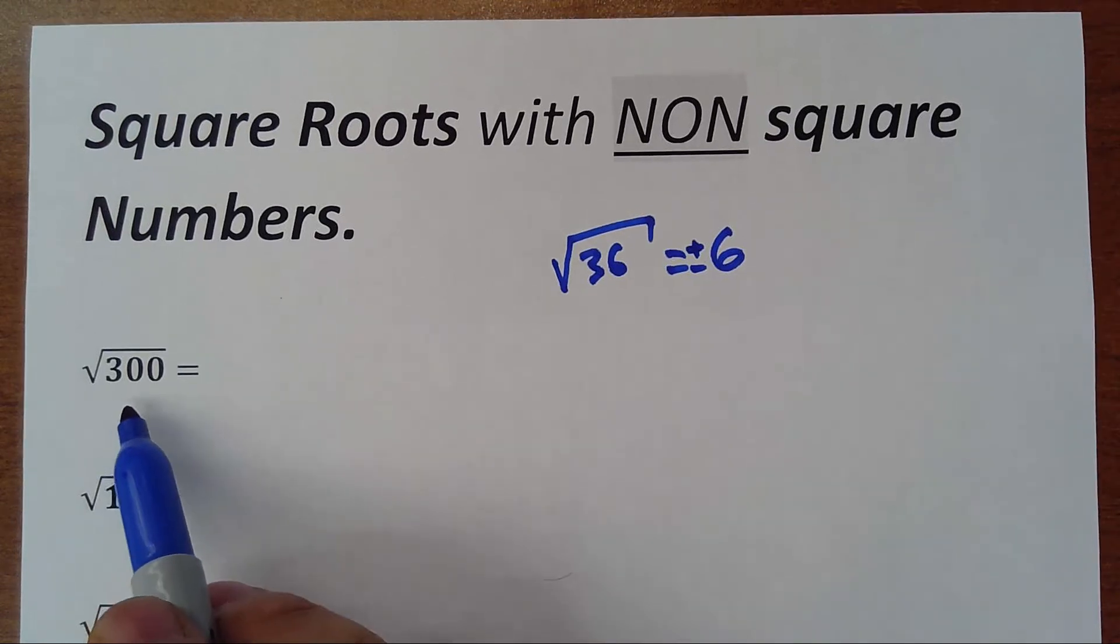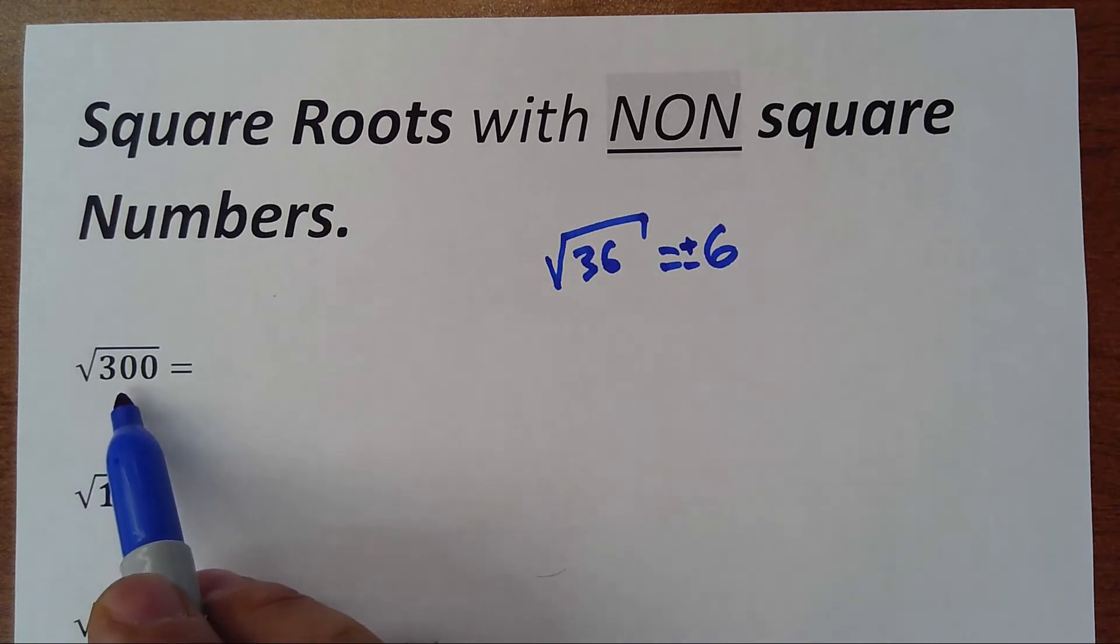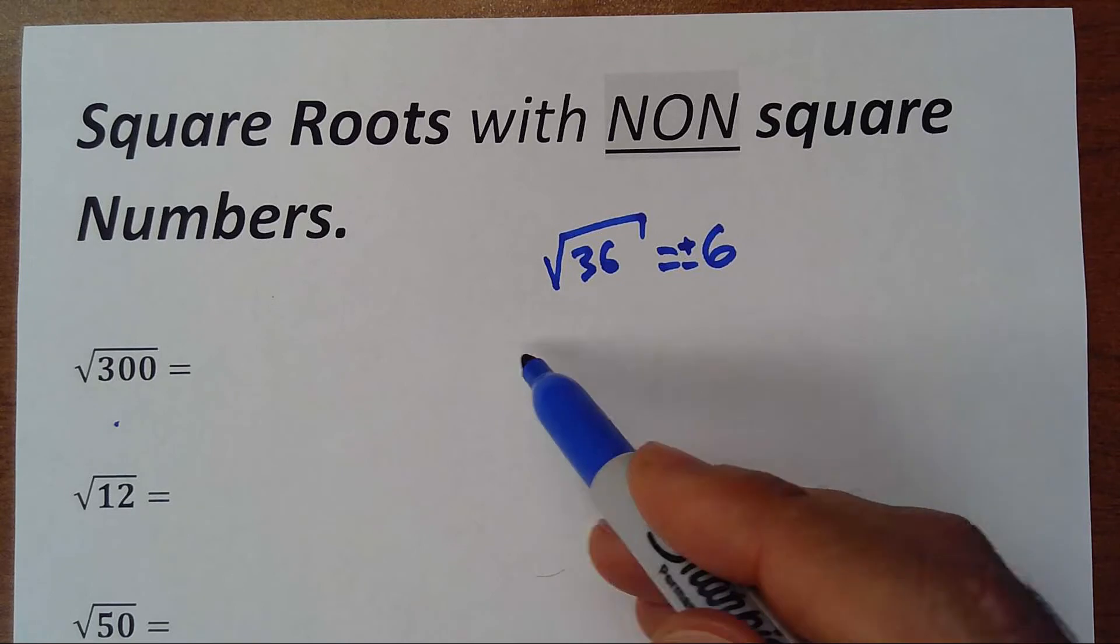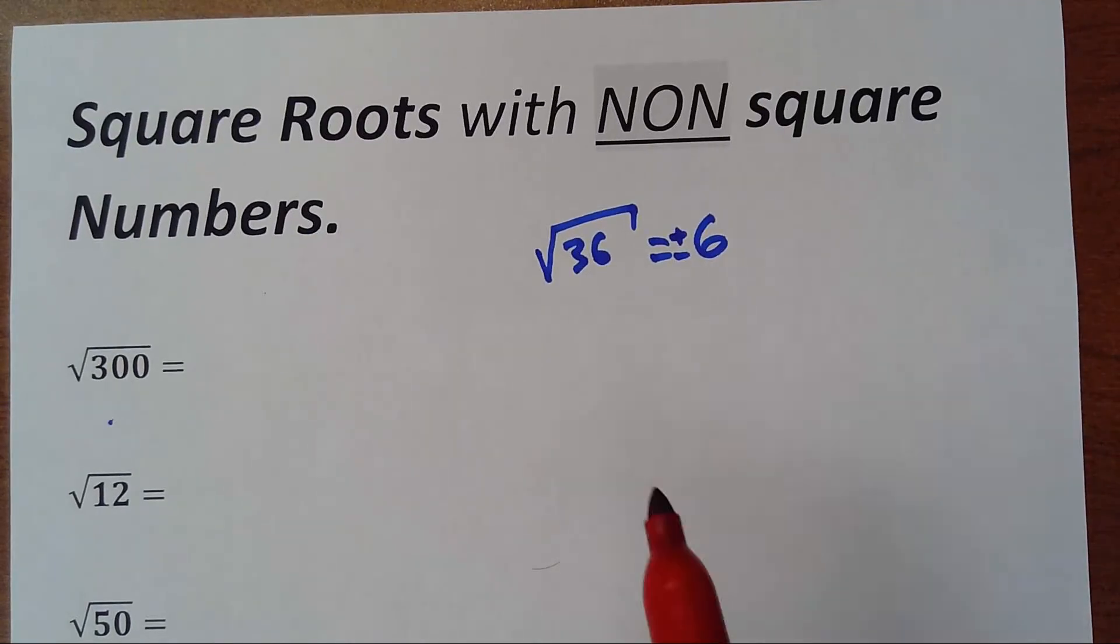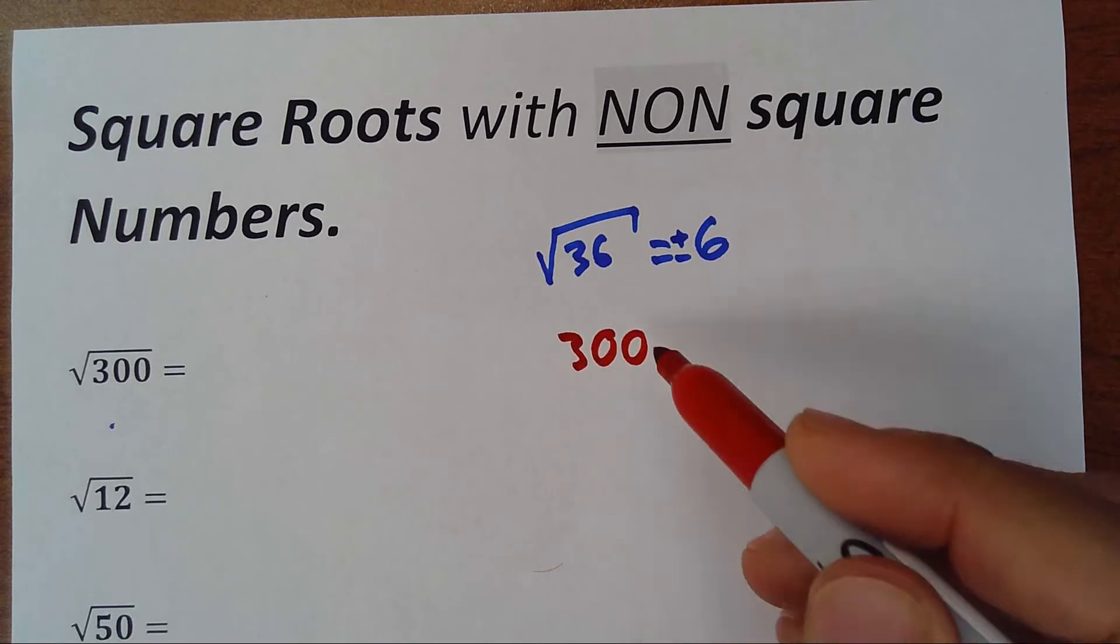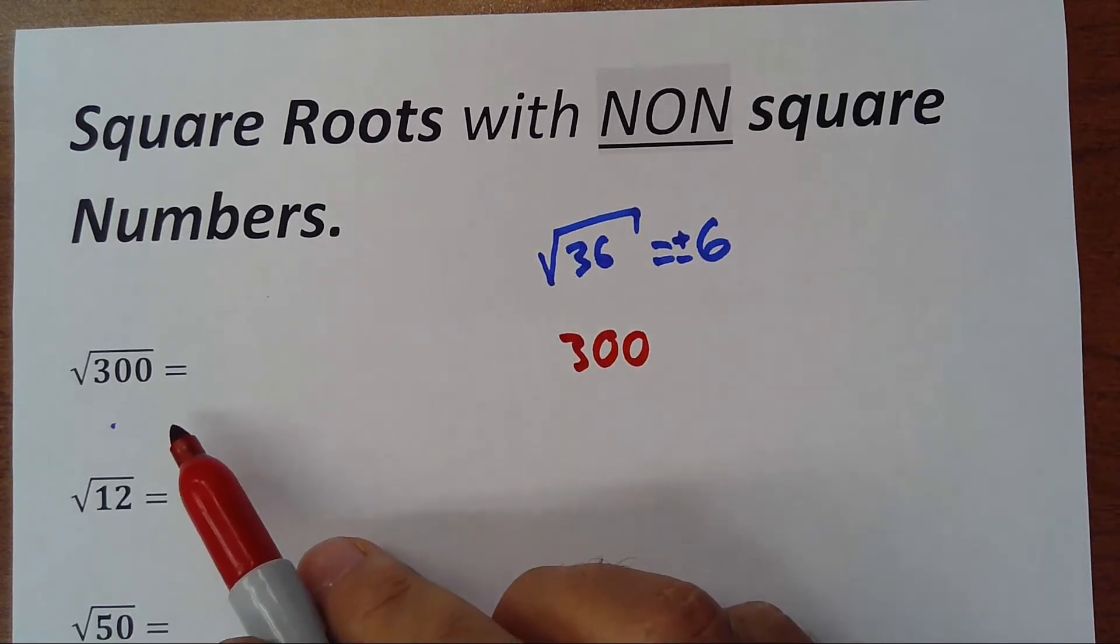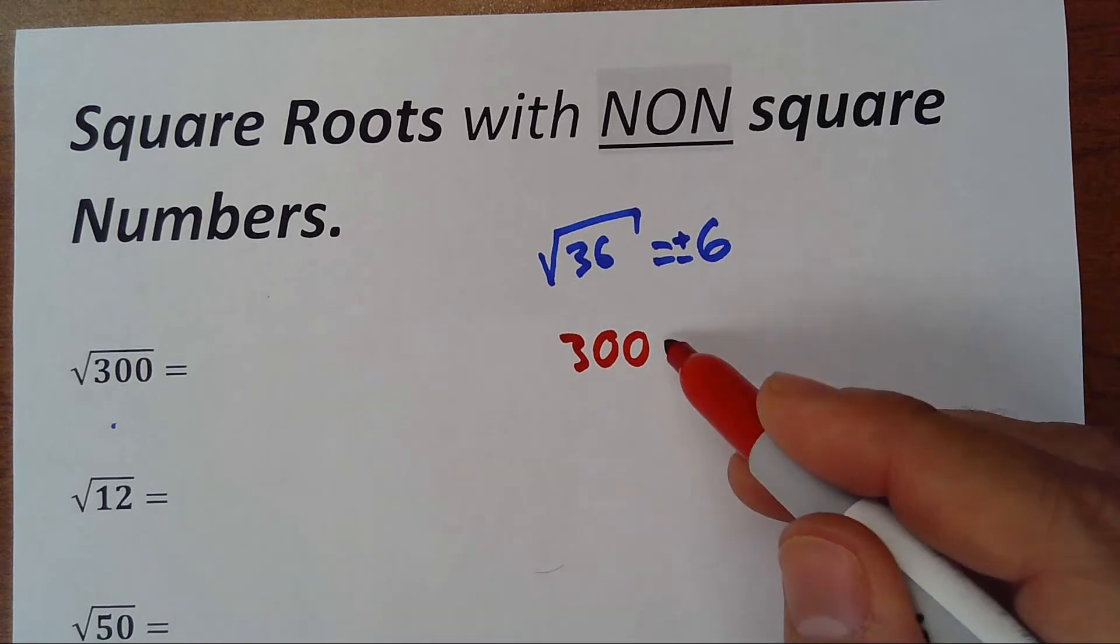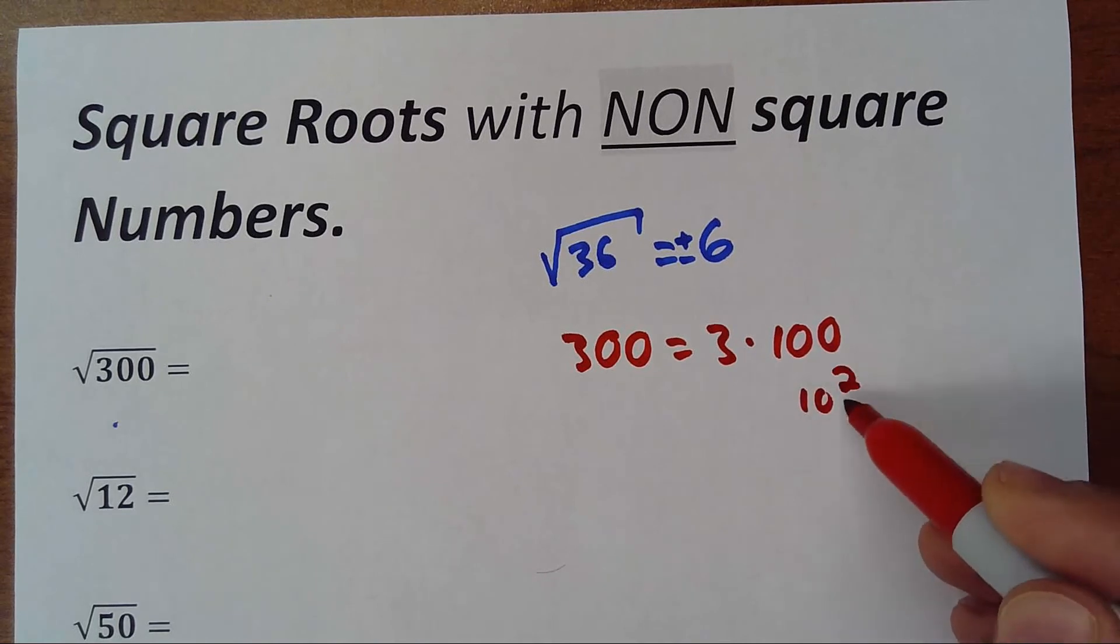But when you have square root of 300, there is not an exact whole number that multiplies by itself to give you 300. So what we do is decompose this number. 300 would be—I'll try to find a square number, the highest possible—so that would be 3 times 100, because I know that 100 is 10 squared. This is a square number, and that's the one I'm going to use to pull out of the root.